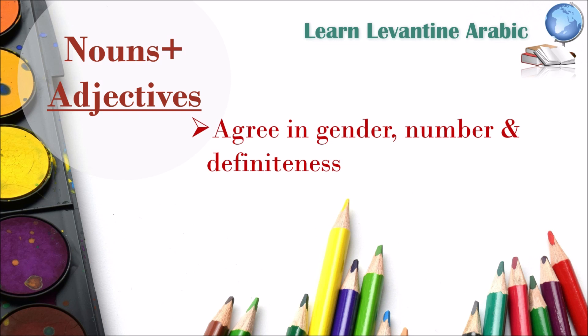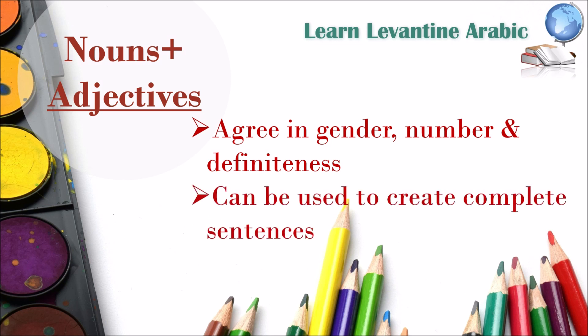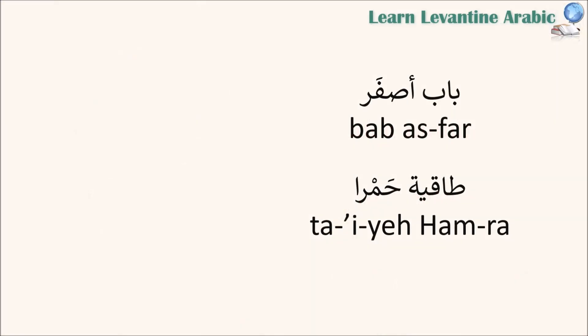The most important thing you need to know is that nouns and adjectives in Arabic agree in gender, number, and definiteness. We're going to illustrate this with examples and see how a noun and an adjective can be used together to create a simple complete sentence. Stay tuned until the end for two new colors and a fun short dialogue.